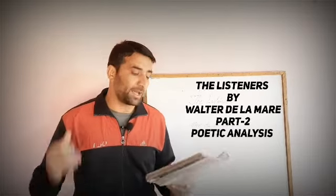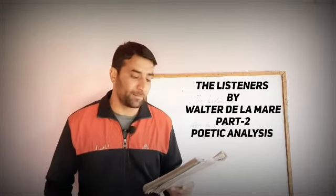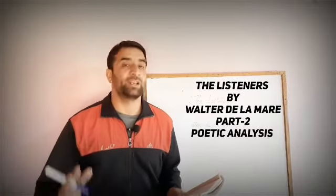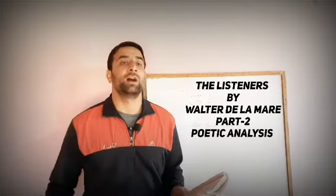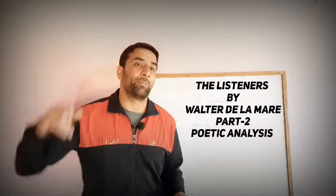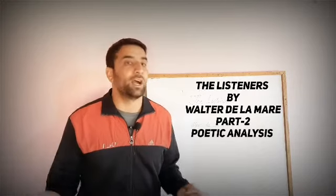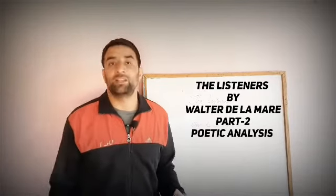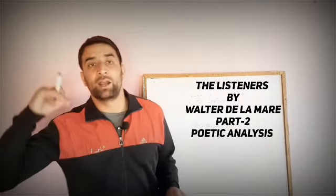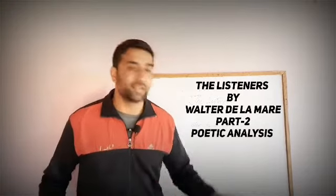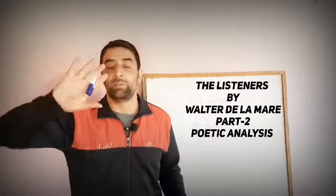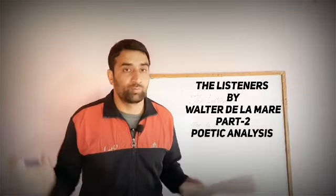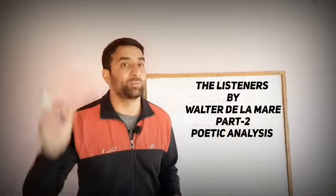اس poem کا پہلا theme یہ ہے — that is supernatural and unknown۔ Throughout the poem we are supposed to interact with supernatural and unknown things۔ چاہے trawler کی بات کریں — ہمیں اس کا نام نہیں پتہ، وہ کہاں سے آیا، کہاں جانا تھا، اور وہاں اس گھر میں کیوں گیا۔ The forest, ferny floor, leaf-fringed sill، moonlit night — سارا کچھ خاموش اور supernatural تھا۔